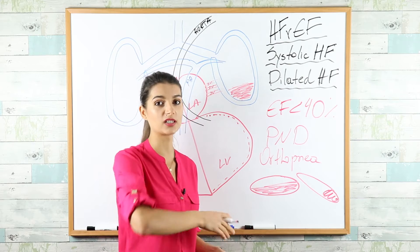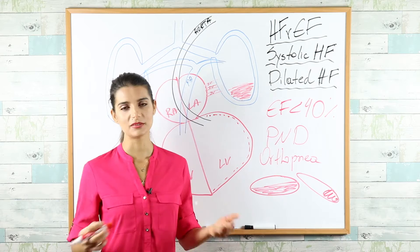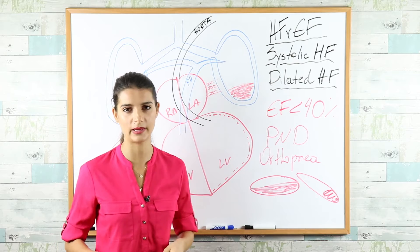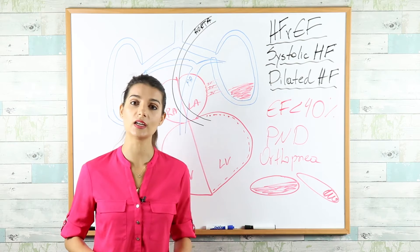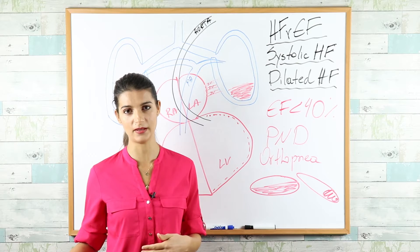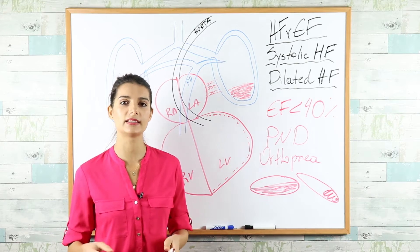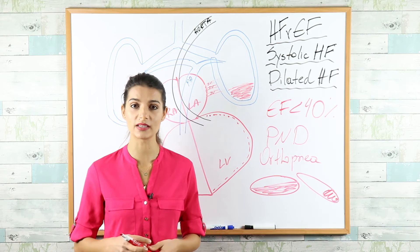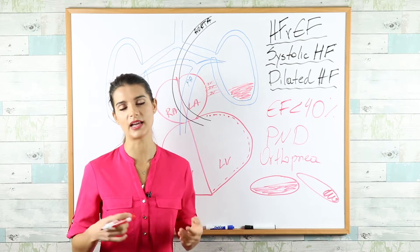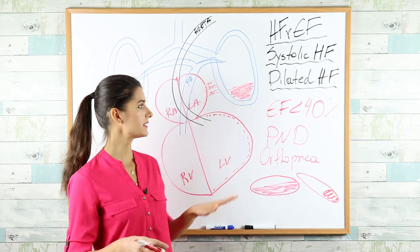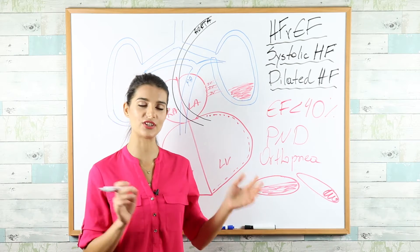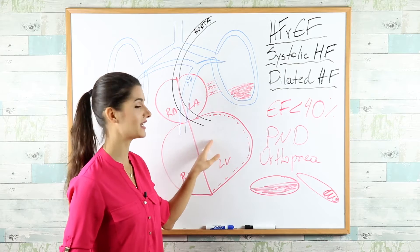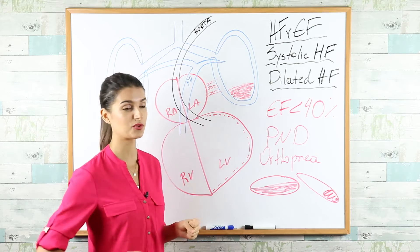If the left ventricle cannot contract properly, it won't push blood forward through the aorta, decreasing cardiac output and thus oxygen delivery to tissues. This explains exertional dyspnea and fatigue — fatigue especially results from lactic acid buildup in muscles forced to use anaerobic glycolysis instead of oxygen. This is why we sometimes call heart failure 'congestive heart failure' due to all this congestion.